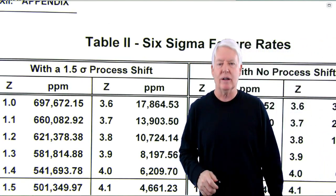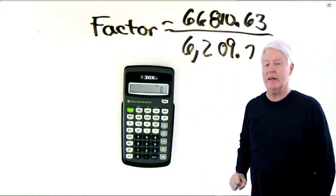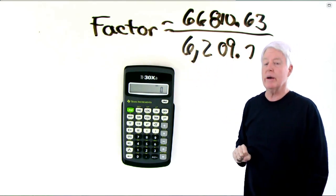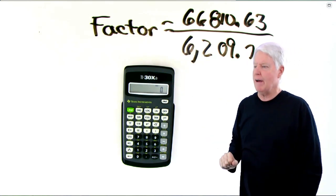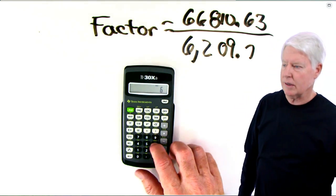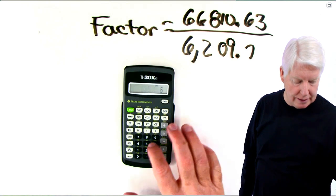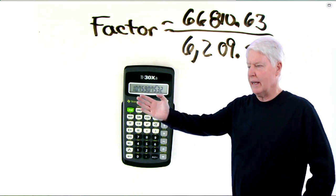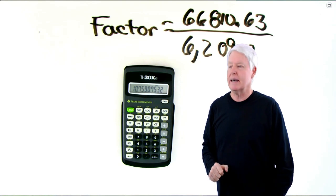Now let's go to the whiteboard and calculate this out. To get the factor, we take 66,810.63 PPM for three sigma divided by 6,209.7 PPM for four sigma. Dividing those gives us a factor of 10.76. ASQ often rounds things off, so the correct answer may just be 10. Let's go back to the question sheet to confirm.